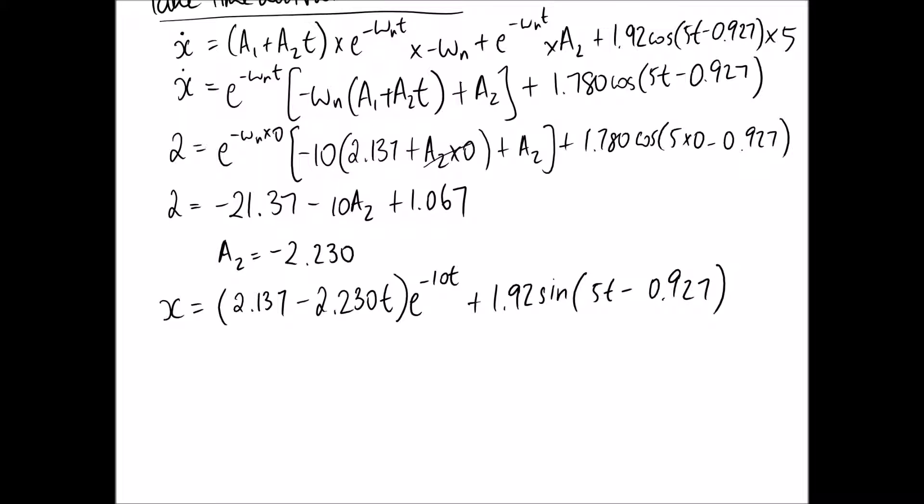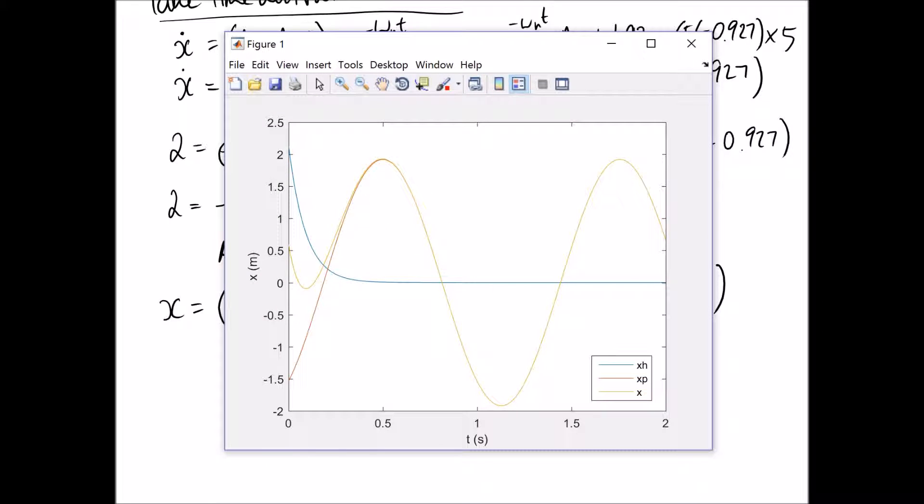Alright, x is in meters and t is in seconds. So if I just quickly show you what that looks like plotted, this is what it is. So the blue line is xh, our homogeneous part. And remember that we found it to be critically damped. So critical damping follows this kind of pattern. You never cross over the zero line. It just always decreases until it hits zero itself.